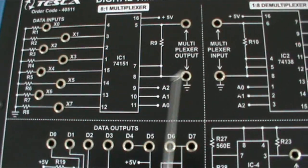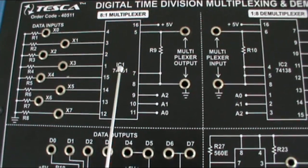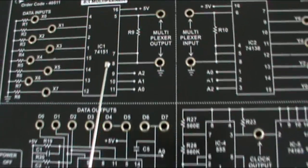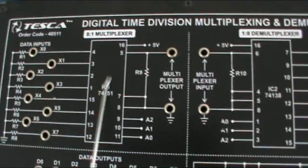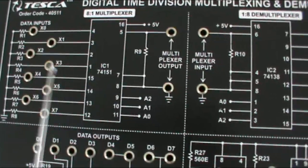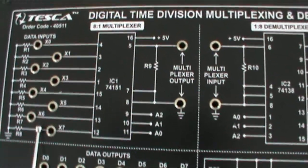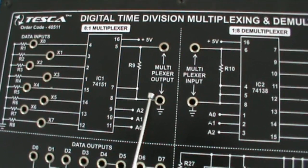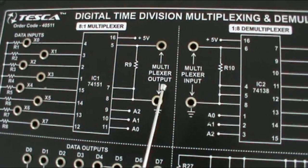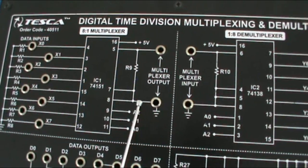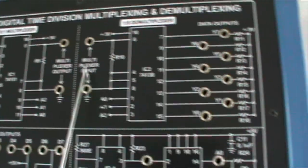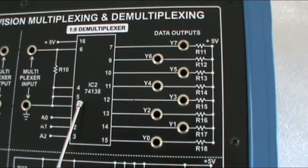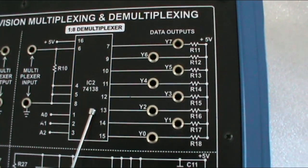D0, D1, D2, and D3 are clock outputs, so you can use these data outputs as input terminals of the 8-to-1 multiplexer. This is the multiplexer block; the circuit is made around the 74151 IC. These are the data inputs, and this is the output — the multiplexer output.